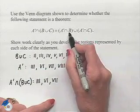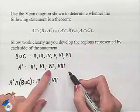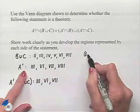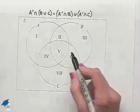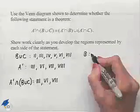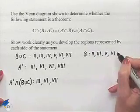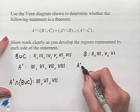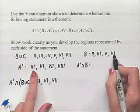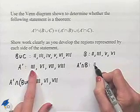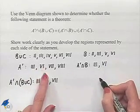We're going to begin inside the first set of parentheses: A complement intersected with B. We already have A complement listed with regions 3, 6, 7, and 8. We just need to think about what regions are enclosed in B — those will be regions 2, 3, 5, and 6. Looking for regions included in both lists, we notice region 3 and region 6. So A complement intersected with B gives us regions 3 and 6.